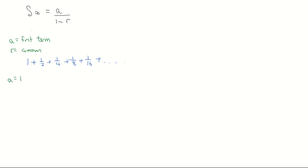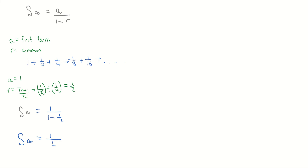Our common ratio r was found by taking any term and dividing by the one before it — taking 1/8 divided by 1/4 gives r = 1/2. Applying the formula, the sum to infinity is a over (1 − r): that's 1 over (1 − 1/2), which is 1 over 1/2, giving a sum to infinity of 2. So adding 1 + 1/2 + 1/4 + 1/8 + 1/16 + 1/32 + 1/64 all the way to infinity gets very close to 2 — it's convergent on the value 2.